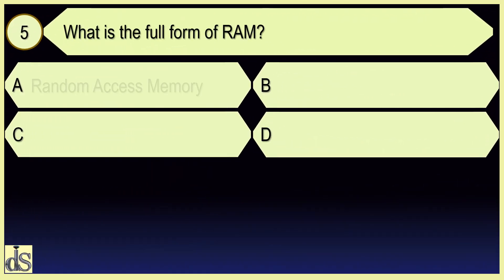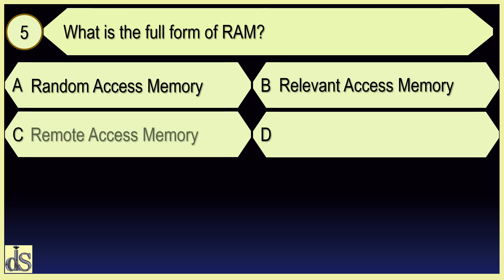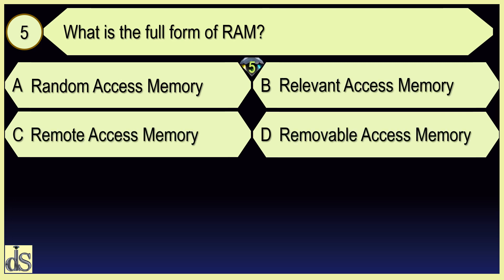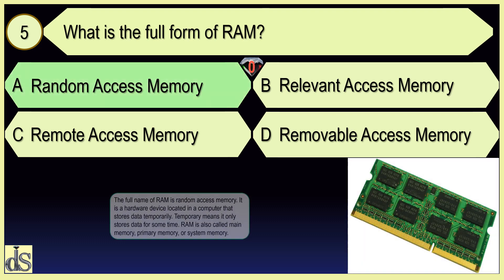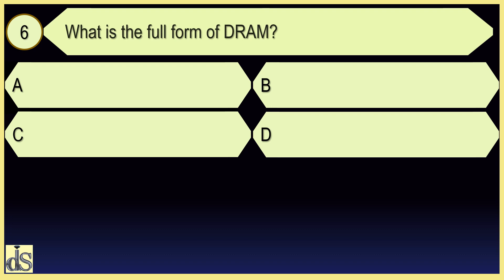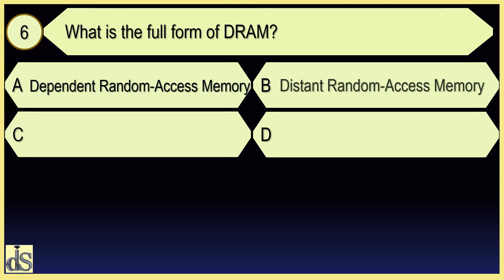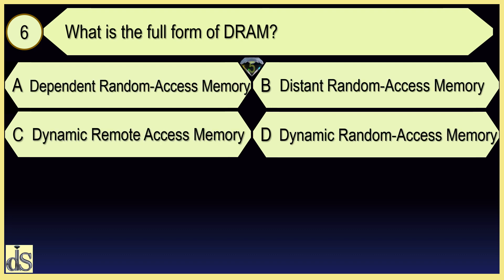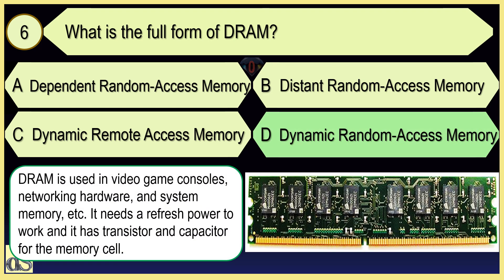What is the full form of RAM? Random Access Memory. What is the full form of DRAM? Dynamic Random Access Memory.